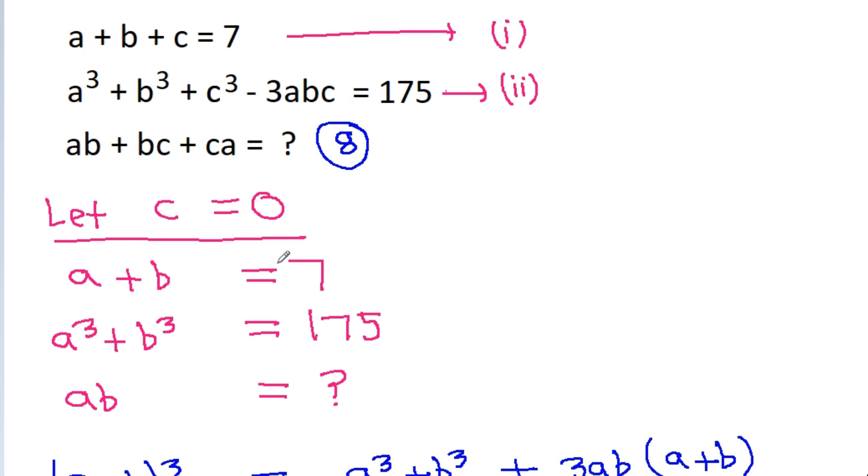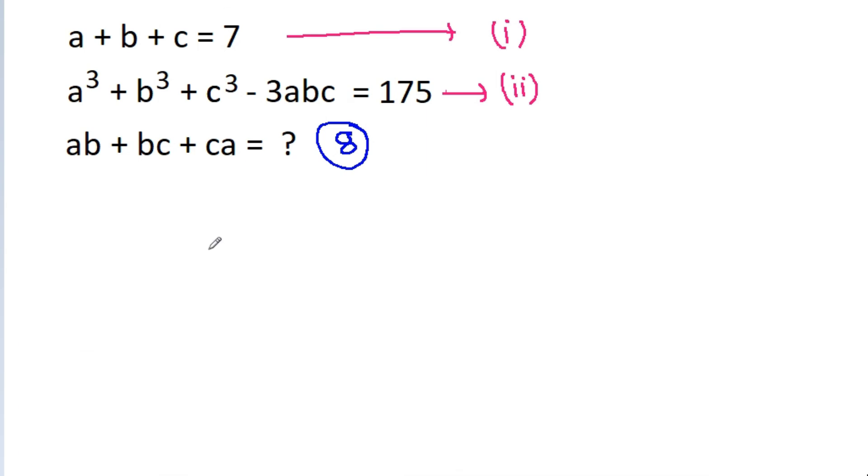Otherwise if you don't want to take c is equal to 0, then we can directly use the formula: a³+b³+c³ minus 3abc is equal to (a+b+c) times (a+b+c)² minus 3 times (ab+bc+ca).